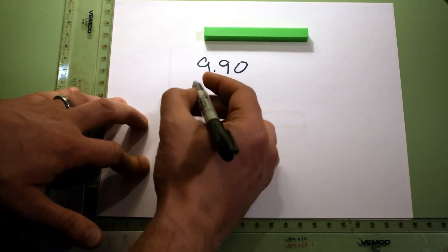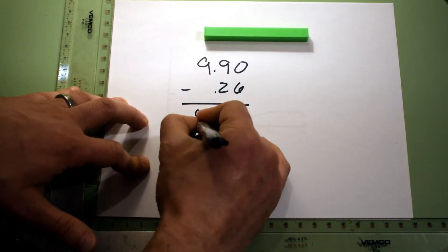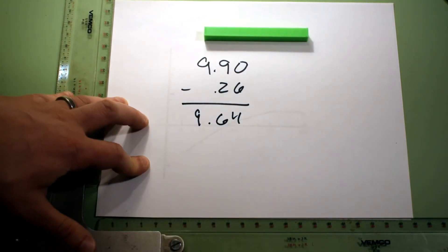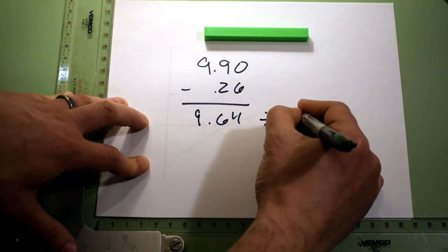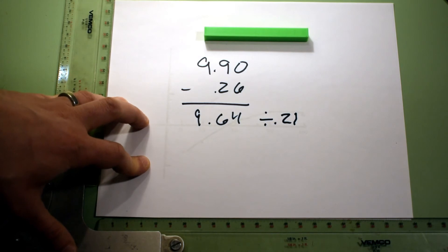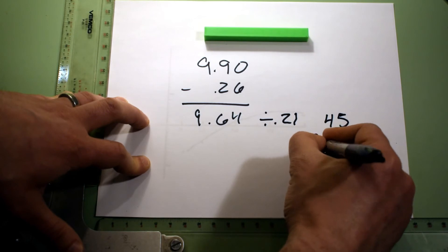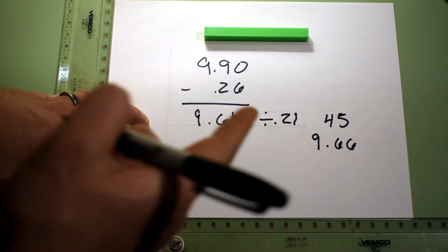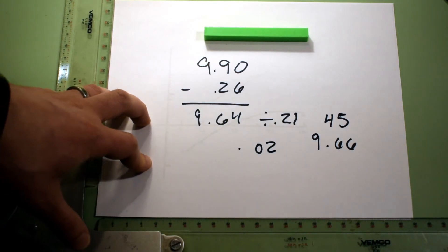The first layer that I used on these parts was 0.26 millimeters thick which gives us a remaining of 9.64 millimeters in the part. The build layer height that I used was 0.21 millimeters and if you divide that out we get about 45 layers which should have given a part thickness of 9.66. So if we subtract those two we end up with a 0.02 millimeter error.